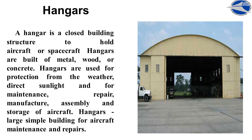A hangar is a closed building structure used to hold aircraft or spacecraft. Hangars are built of metal, wood or concrete. They are used for protection from the weather and direct sunlight, and for maintenance, repair, manufacture, assembly and storage of aircraft. Hangars are large simple buildings for aircraft maintenance and repairs, where aircraft mechanics and technicians usually work.